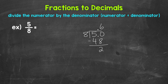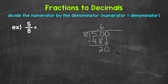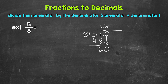We don't have a clean cut zero at the bottom, so we can continue on by using another zero that we can bring down. So now we have 20 — 20 divided by 8. How many whole groups of 8 in 20? Well, 2 — that gets us to 16. Multiply: 2 times 8 is 16. Subtract: 20 minus 16 is 4. We still don't have that clean cut zero at the bottom.